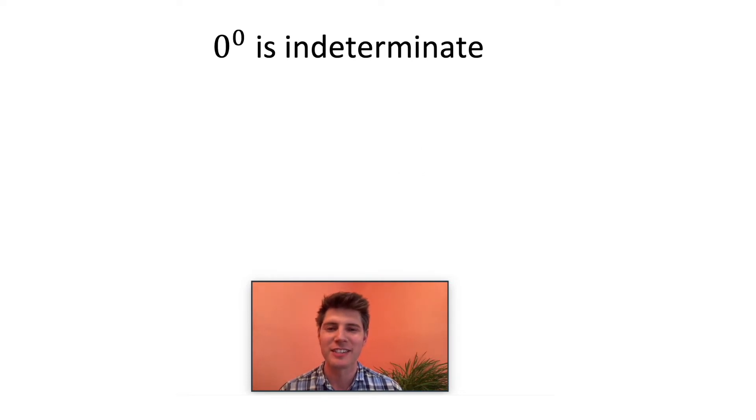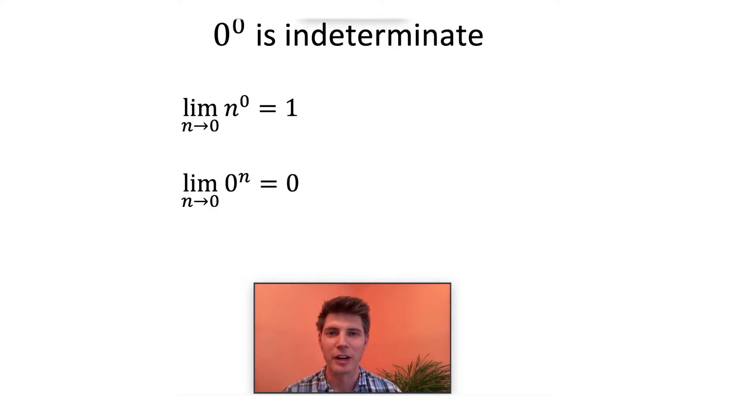So another comment a lot of people are saying is that zero to the zero is indeterminate. When you enter calculus and you start looking at limits of functions and how they interact with each other as they approach certain points, some really cool stuff can happen. Here's some limits some people brought up. So the limit of n to the zero, if we plug in five, we know that's one, four gives us one.